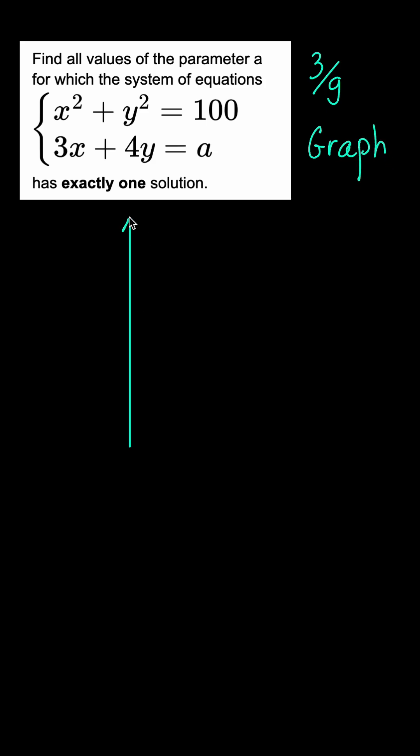Let's again treat the first equation as the equation of a circle with center 0, 0 and radius 10. The second equation represents a line that, depending on the parameter, is shifted up or down, remaining parallel to itself. The system has a unique solution when the line is tangent to the circle.